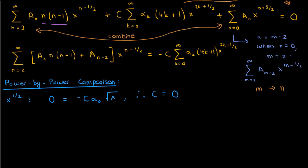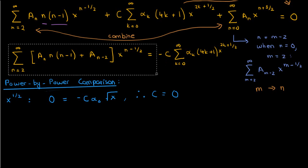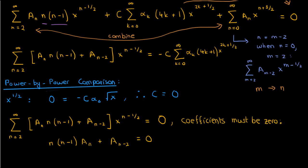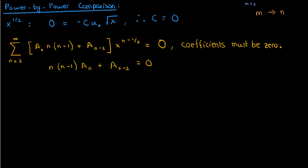The fact that c equals 0 makes our solution much simpler — all we're left with is an equation in terms of capital A sub n. Since the summation equals 0, its coefficients must be 0, giving a recursion relation. Rearranging, we get capital A sub n equals negative A sub n minus 2 divided by n times n minus 1. This means every coefficient A sub n is related to the coefficient two terms behind it.